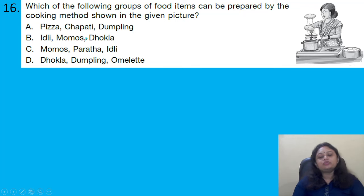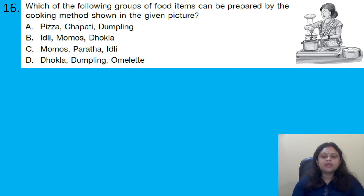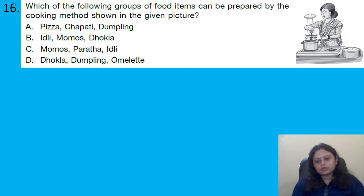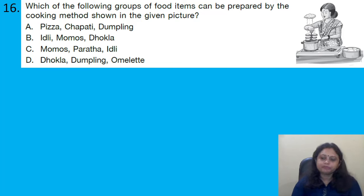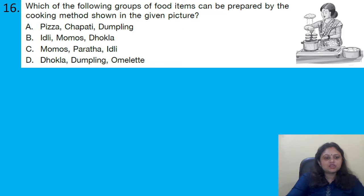Which of the following groups of food items can be prepared by the cooking method shown in the given picture? The picture shows steaming. Option A: pizza, chapati, dumpling. Option B: idli, momos, dhokla. Option C: momos, paratha, idli. Option D: dhokla, dumpling, omelette. Foods prepared by steaming include idli, momos and dhokla. So the correct answer is option B.